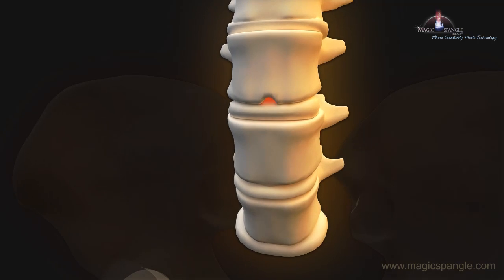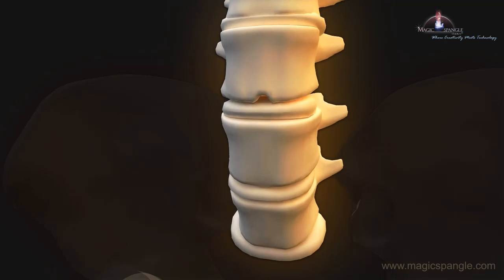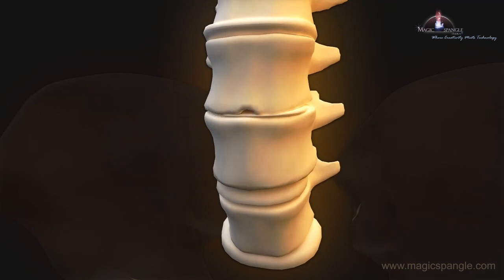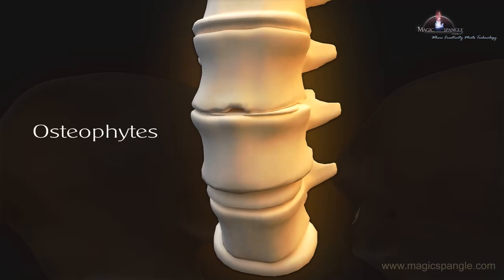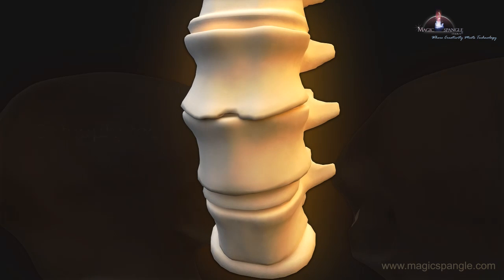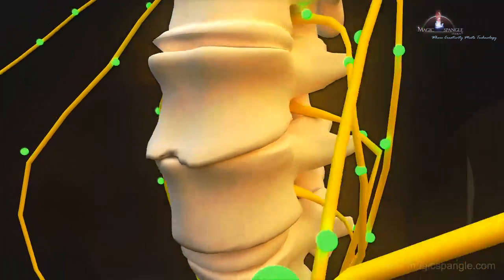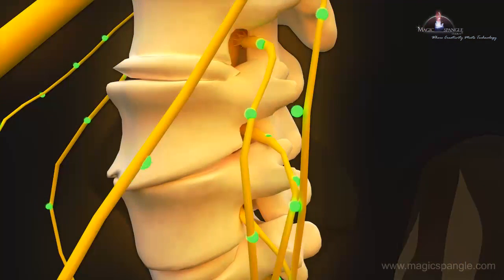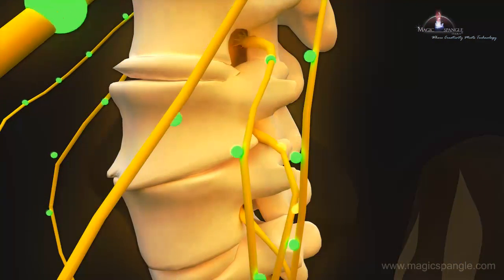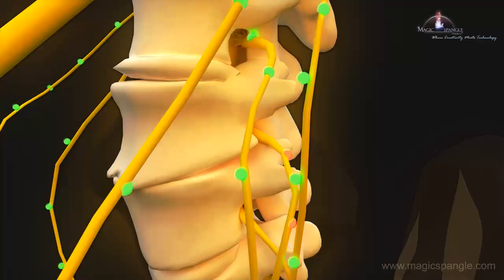Over time, when left untreated, your disc will thin and the vertebrae grow these spurs, also known as osteophytes, and ultimately your spine will start to seize. But as these spurs grow, they'll begin to squeeze your spinal nerves and severe debilitating pain can develop.